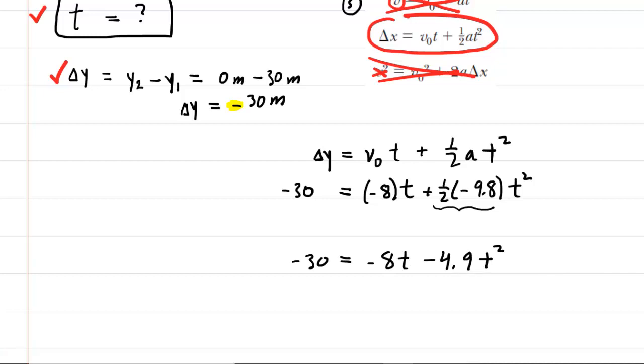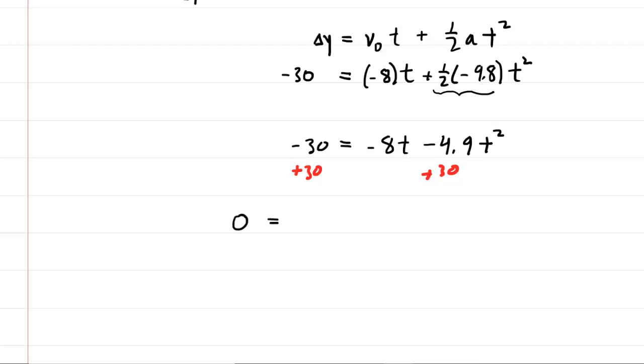It's quadratic because it contains our variable squared along with our variable raised to the power of 1. So this is a quadratic equation. We're going to need to use the quadratic formula to solve it. Perhaps the easiest thing to do here would be to add 30 over to the right-hand side. The left side becomes 0. And then if we rearrange the terms in standard order, we have negative 4.9 t squared minus 8t plus 30.